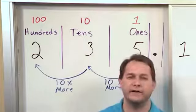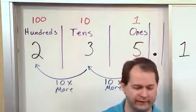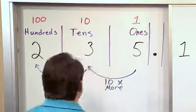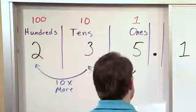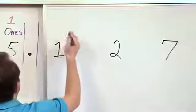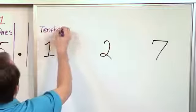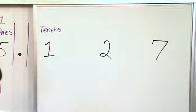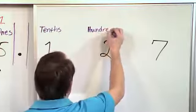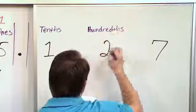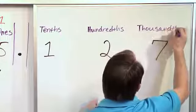Now that we've talked about the left side, everything on the other side of the decimal point should make absolute sense. On the other side of the decimal point, the first digit is called the tenths — not the tens — the tenths place. The next one is called the hundredths place. And the next one is called the thousandths place.